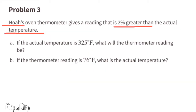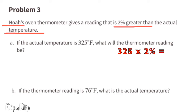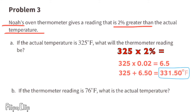Problem 3 — Noah's oven thermometer gives a reading that is 2 percent greater than the actual temperature. Part A: If the actual temperature is 325 degrees Fahrenheit, what will the thermometer reading be? 325 times 0.02 equals 6.5. Then 325 plus 6.5 equals 331.5 degrees Fahrenheit.